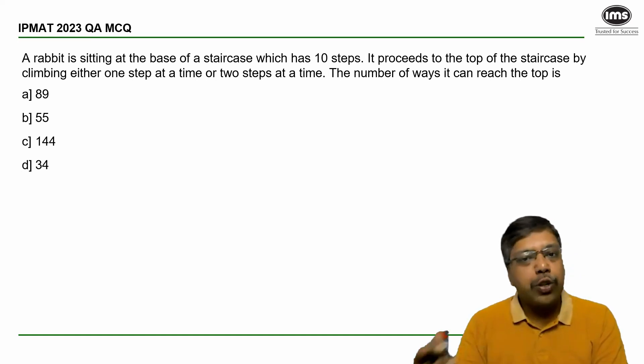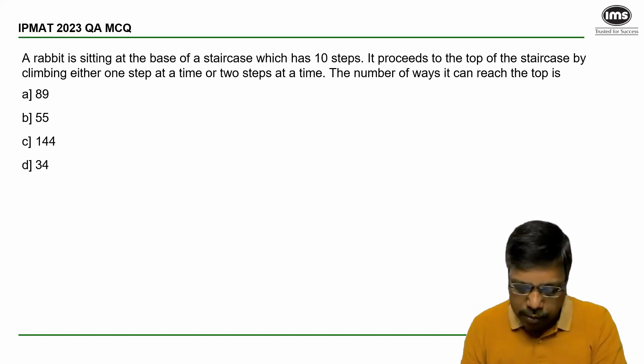It proceeds to the top of the staircase by climbing either one step at a time or two steps at a time. The number of ways it can reach the top is?